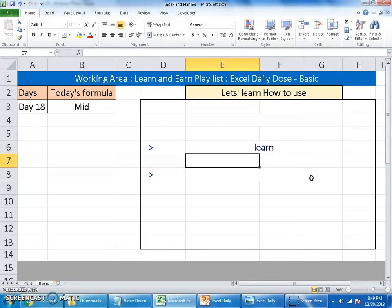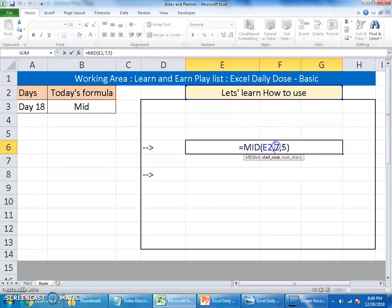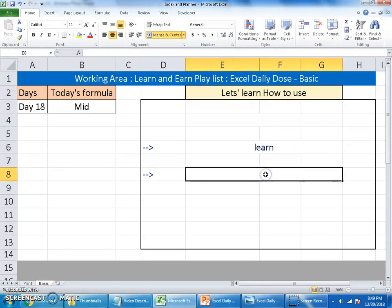There we go. That is one, two, three, four, five. 'Learn' is the result when you truncate from the seventh character for the next five characters. Let me show you one more example just to make it clear for us.